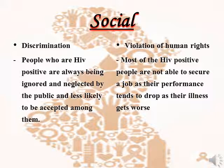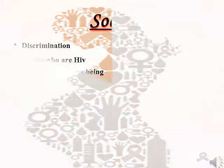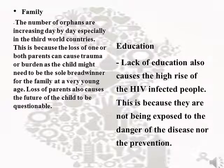The second social effect is the violation of human rights. Most people with HIV or AIDS are not able to secure a job as their performance tends to drop as their illness gets worse. Family is also one of the effects under the social category. The number of orphans affected by HIV is especially high in third world countries, as the loss of one or both parents can cause trauma and burden, since the child may need to become the sole breadwinner for the family at a very young age, and the loss of parents also jeopardizes the child's future.